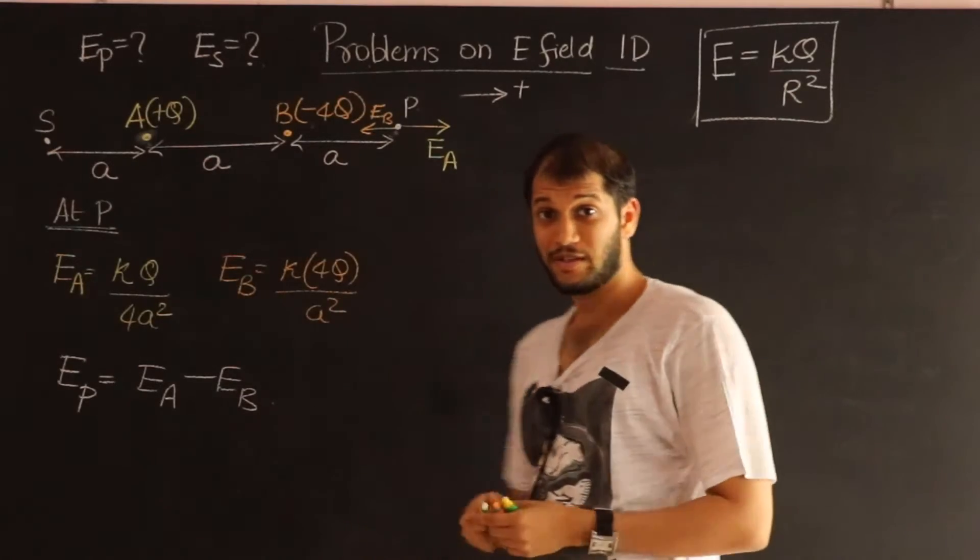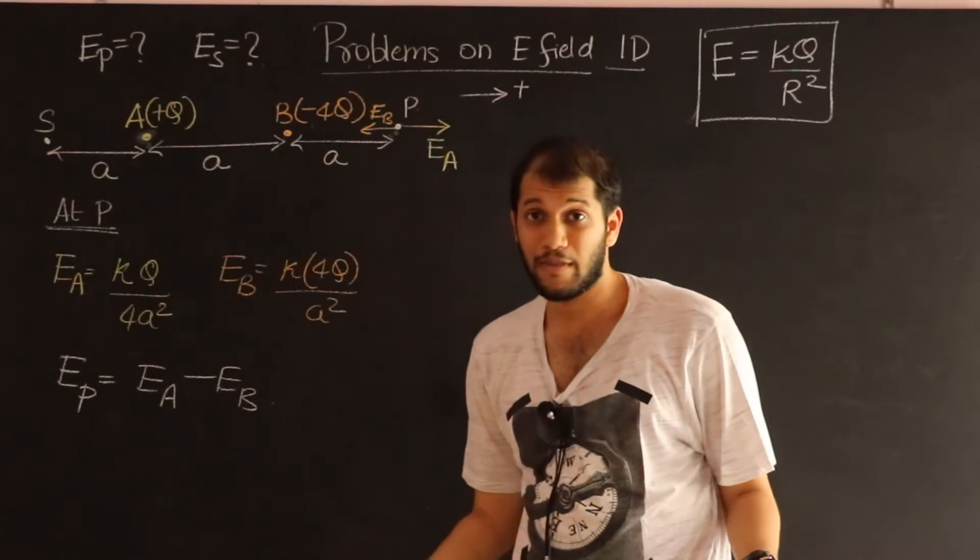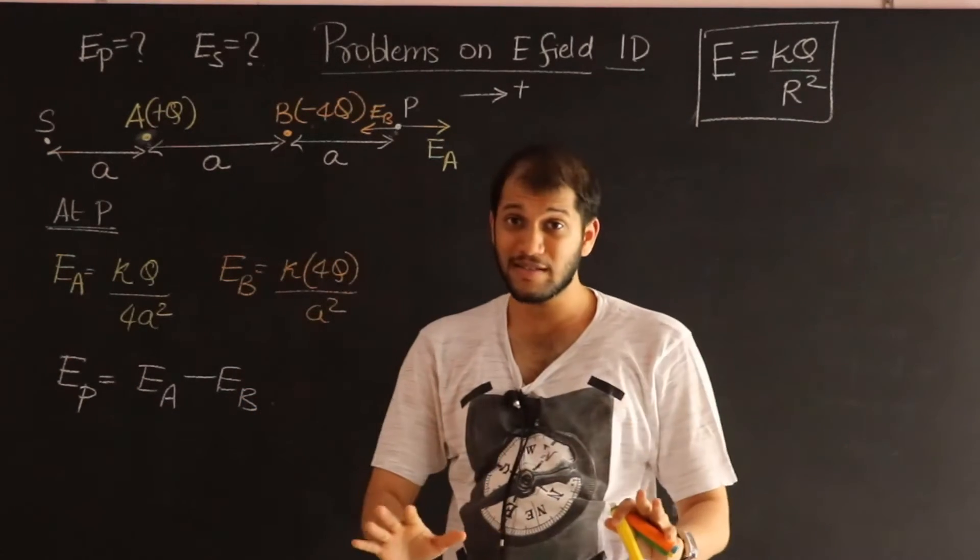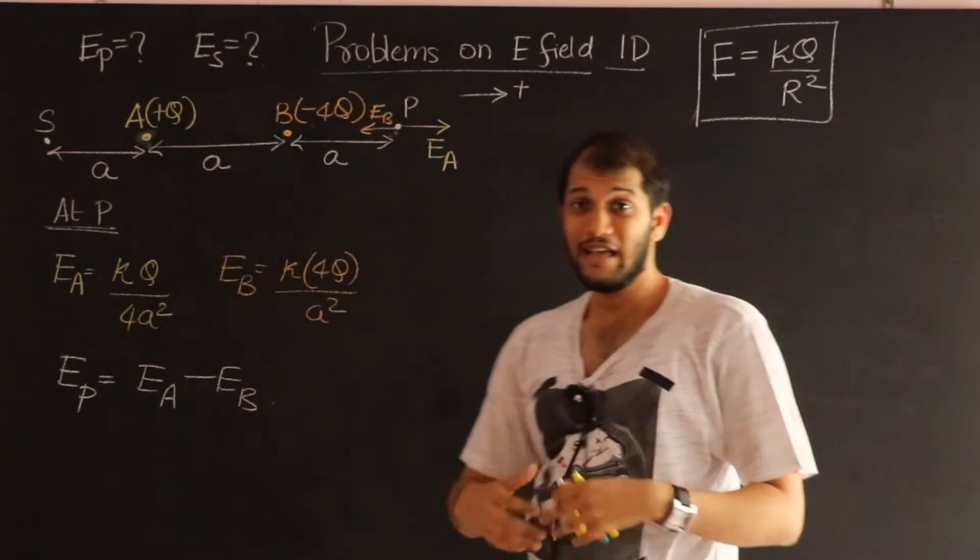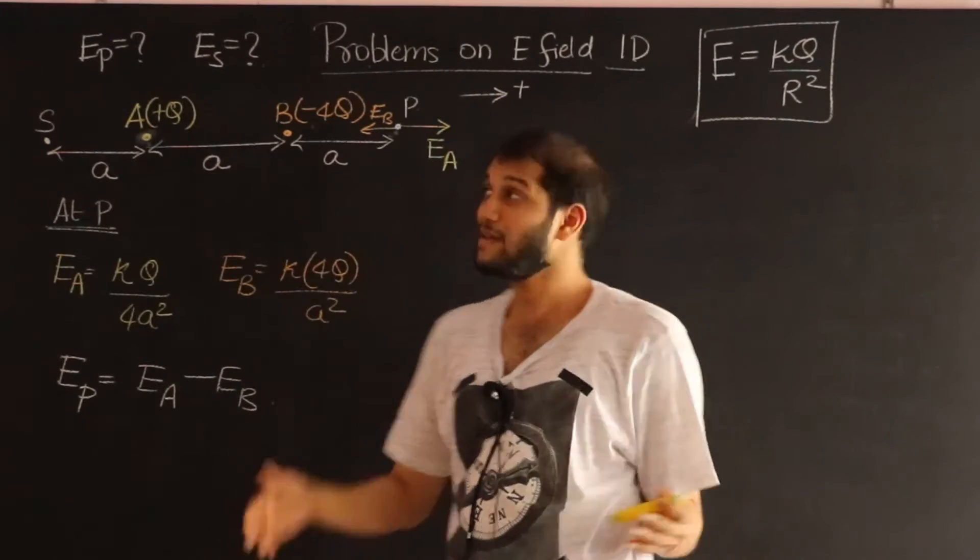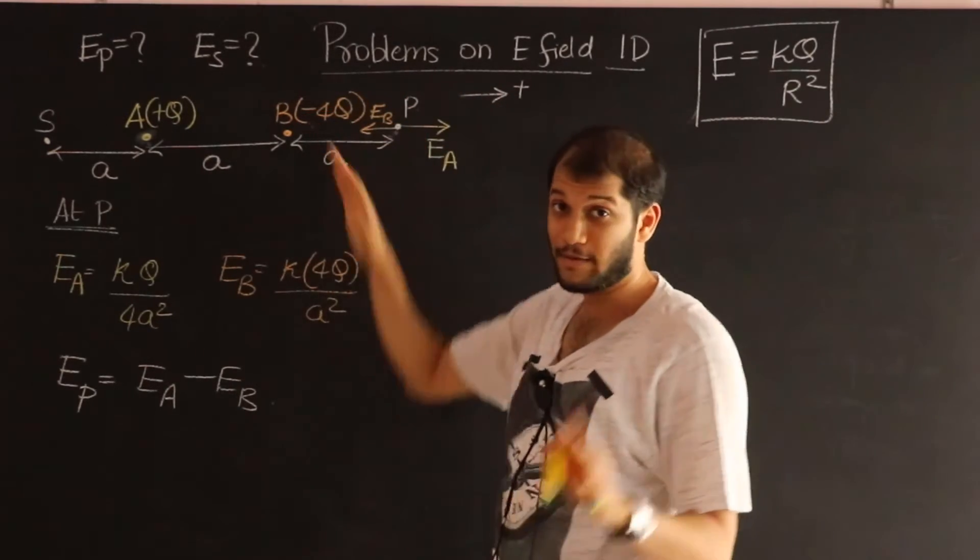Now, if my final answer turns out to be positive, then the net field is in the positive direction. If my final answer turns out to be negative, all it tells me is that my net field is in the opposite direction. That's all.